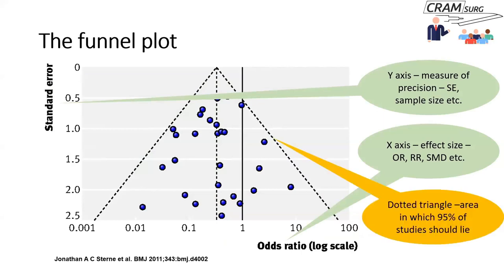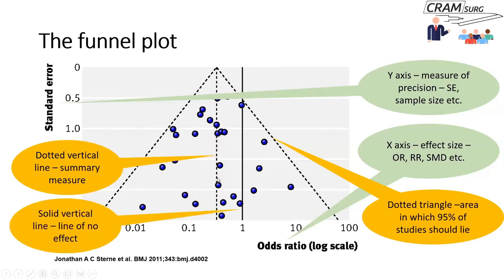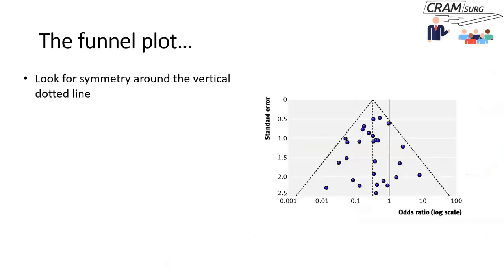This is an example of a funnel plot. On the x-axis you have the effect size — the odds ratio, relative risk, or difference. On the y-axis you have some measure of the precision of the study, which usually relates to sample size. You've got a dotted triangle covering the area within which 95% of studies should ideally lie if there's no publication bias, and a vertical line representing the summary measure calculated in your meta-analysis.